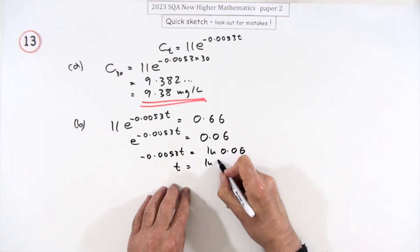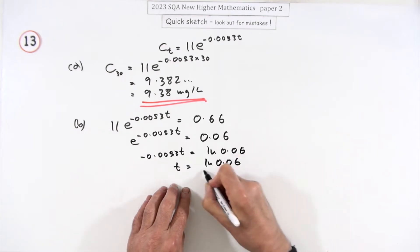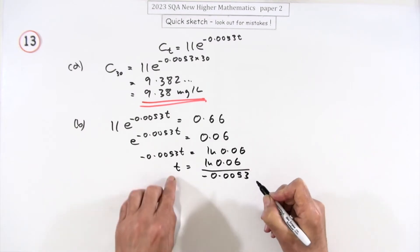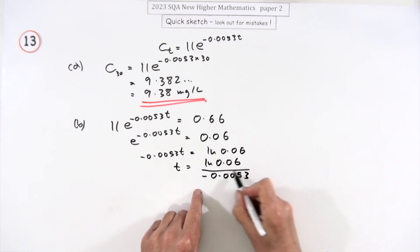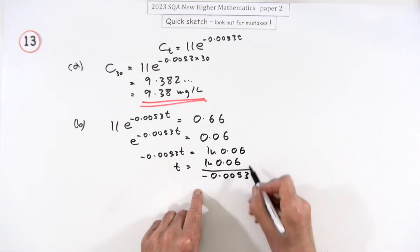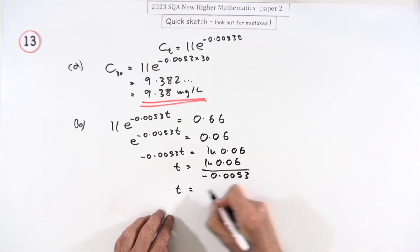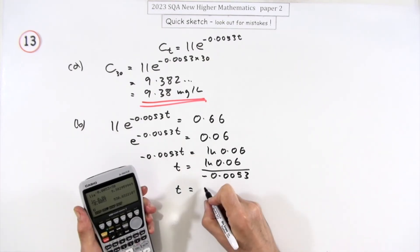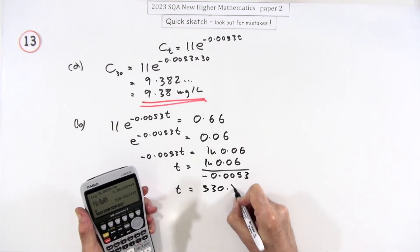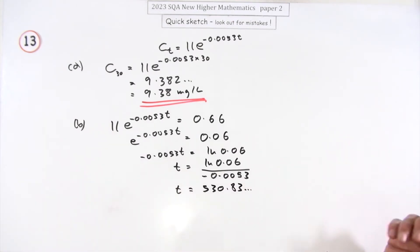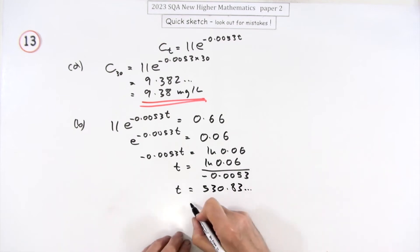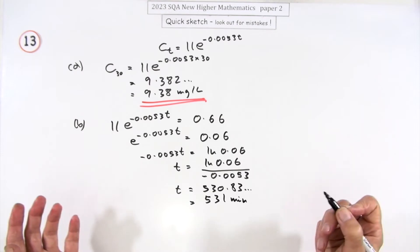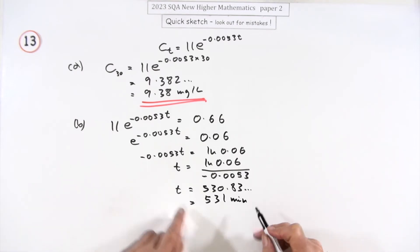Finally, t is going to be ln(0.066) all divided by negative 0.0053. The logarithm of a number less than one will be negative, so don't worry about dividing by a negative — press the button and you get 531.83, which is in minutes, so round to 531 minutes.